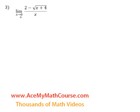Evaluate the limit as x approaches 0 of 2 minus root of x plus 4, all over x. Right away, we know that we can't plug the 0 in for x, because if we were to do that, we would end up with 0 in the denominator. And that's just not allowed.